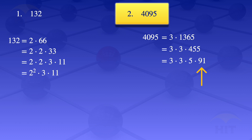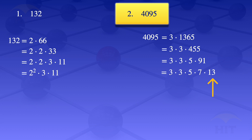Now we look at the prime factors of 91. After 5, we try 7. 91 divided by 7 gives us 13, so our expression becomes 3 times 3 times 5 times 7 times 13. Since 13 is a prime number, that's the prime factorization of 4095, which we can write as 3 squared times 5 times 7 times 13.